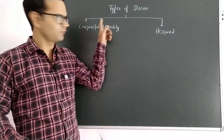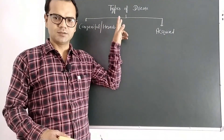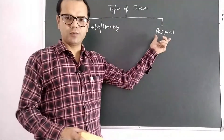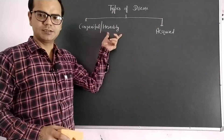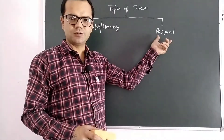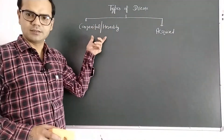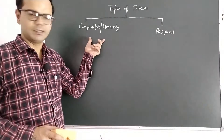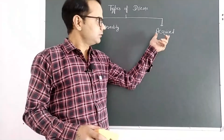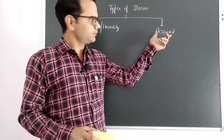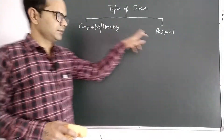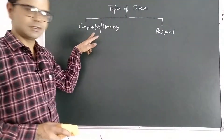Hello everyone, today we will discuss types of disease. Basically, diseases are of two types: congenital disease and acquired disease. Congenital diseases are also called hereditary diseases or genetic disorders, while acquired diseases are non-genetic disorders. Congenital diseases are present in the body by birth, and acquired diseases come into the body after birth, acquired by some external sources.